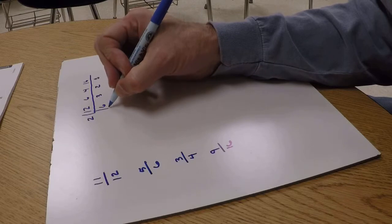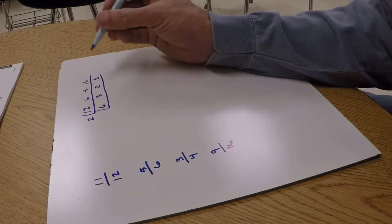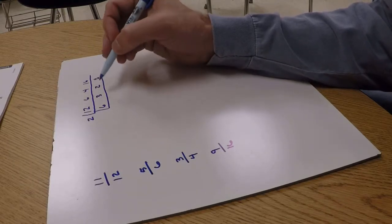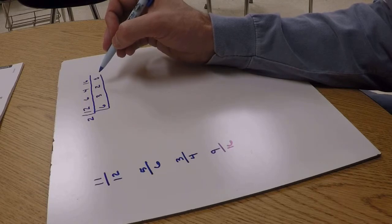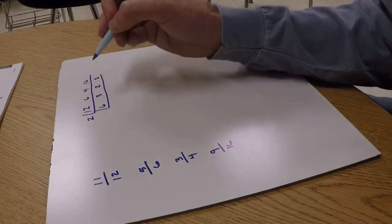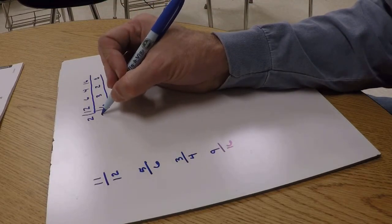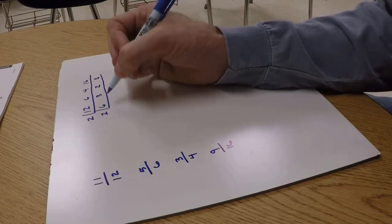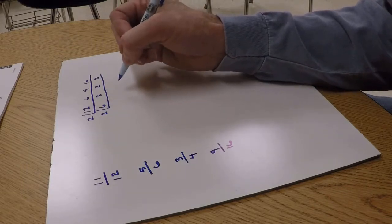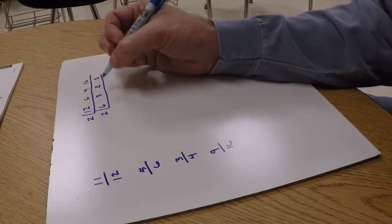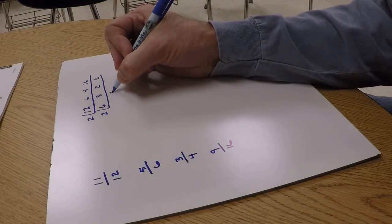I can still break that down. I still have 2's that are common in all these. If 2 or whatever number you put on the outside won't go into it evenly, just drop that number down. For instance, this 3, 2 won't go into 3 evenly, so I just bring down the 3.